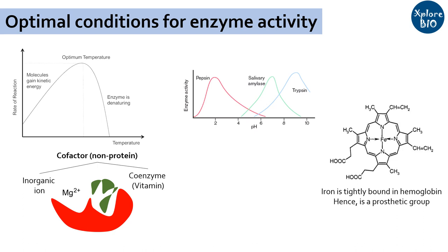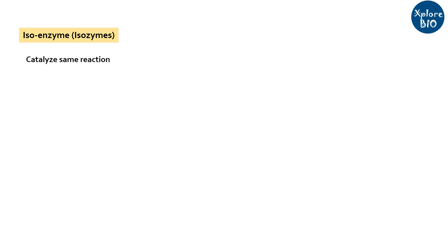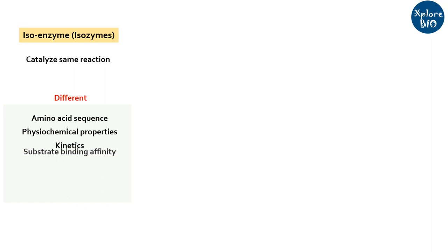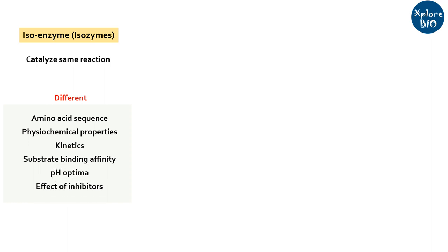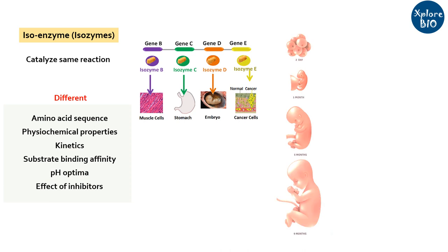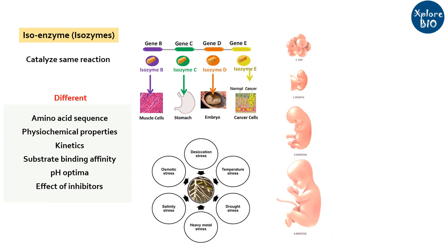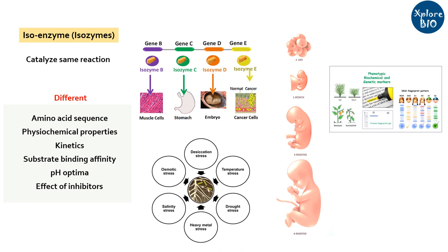The protein part of the enzyme is called the apoenzyme and the non-protein part is called the cofactor. Together they form a holoenzyme, which is the fully functional form of the enzyme. Isoenzymes or isozymes are different forms of enzymes that catalyze the same reaction but have different amino acid sequences, and different physical and kinetic properties such as different isoelectric point, substrate binding affinity, optimum pH, and effect of inhibitors. Different isoenzymes may be active in different tissues, different developmental stages, or stress conditions. Isoenzymes are also used as molecular markers.